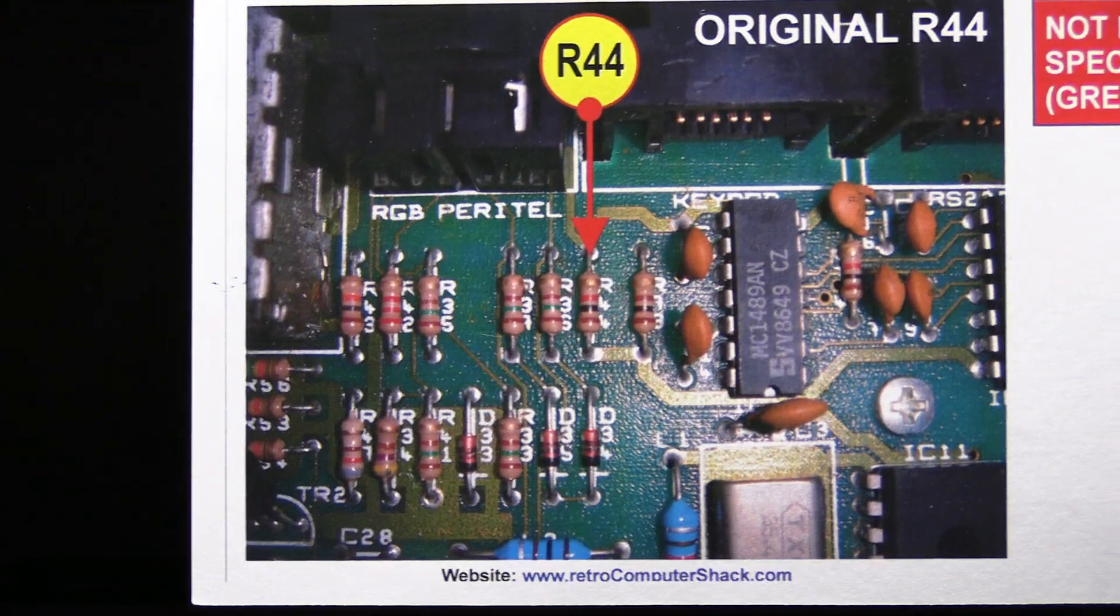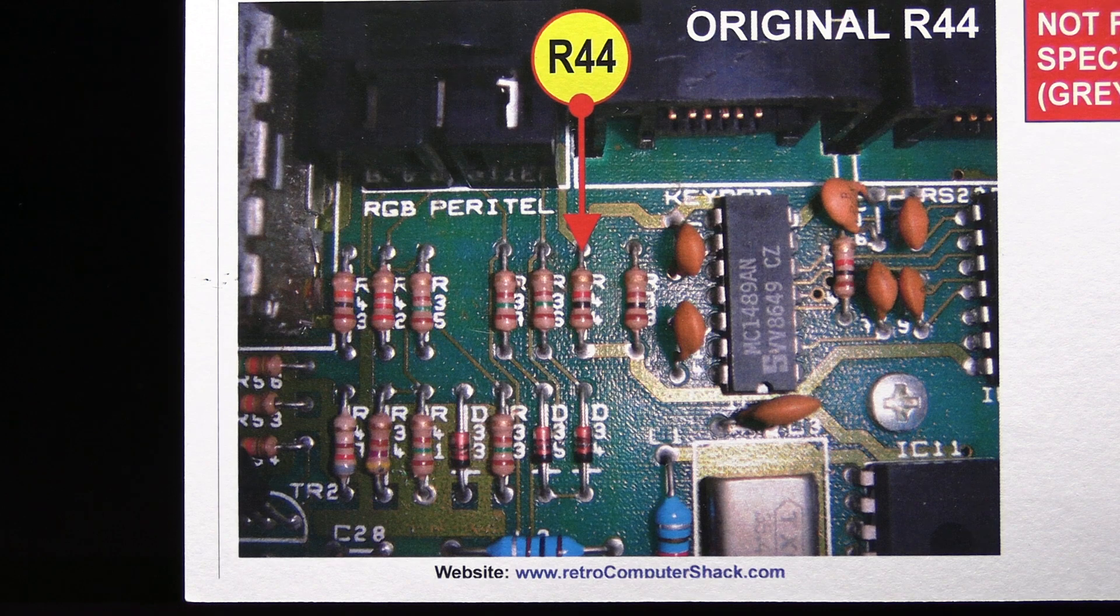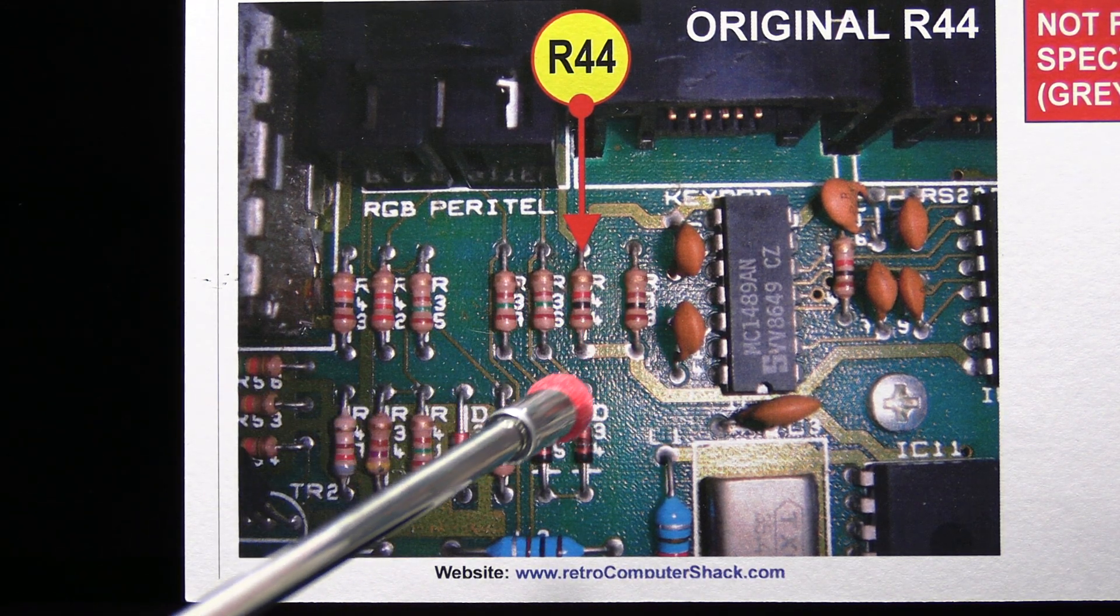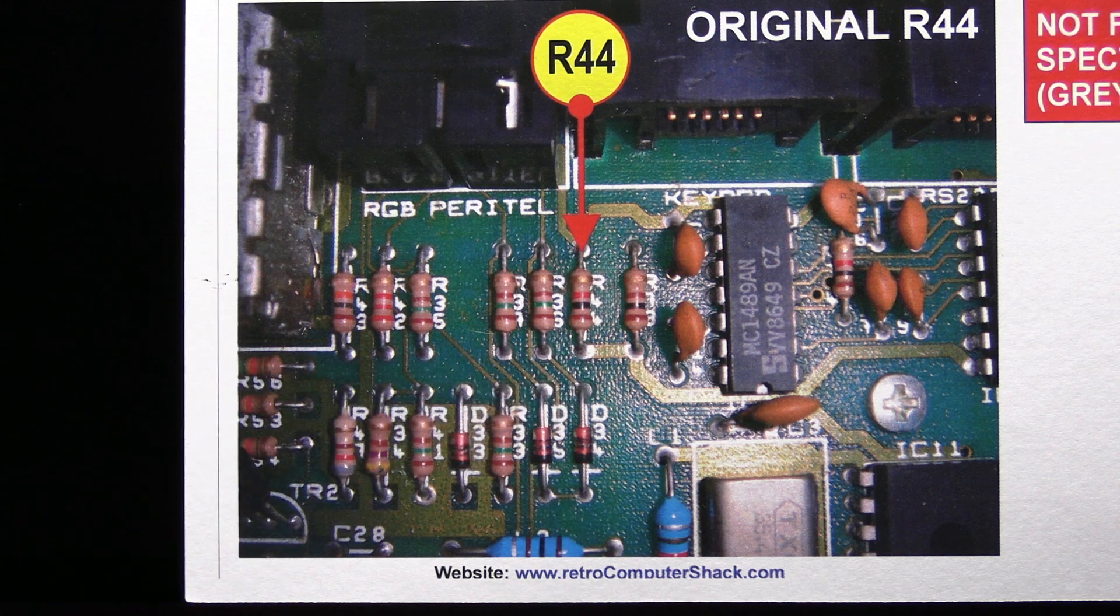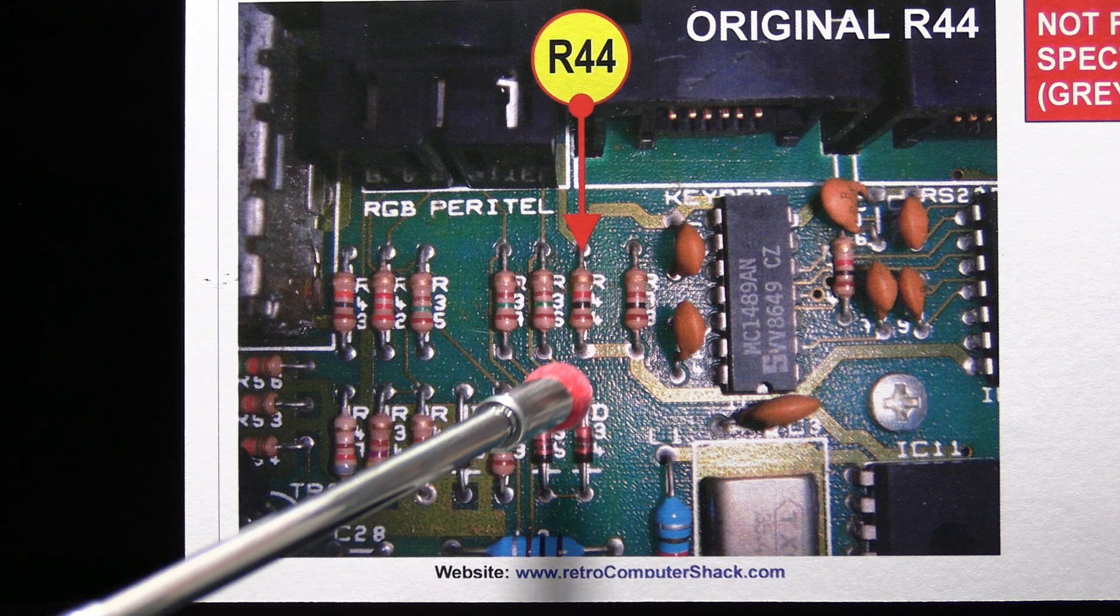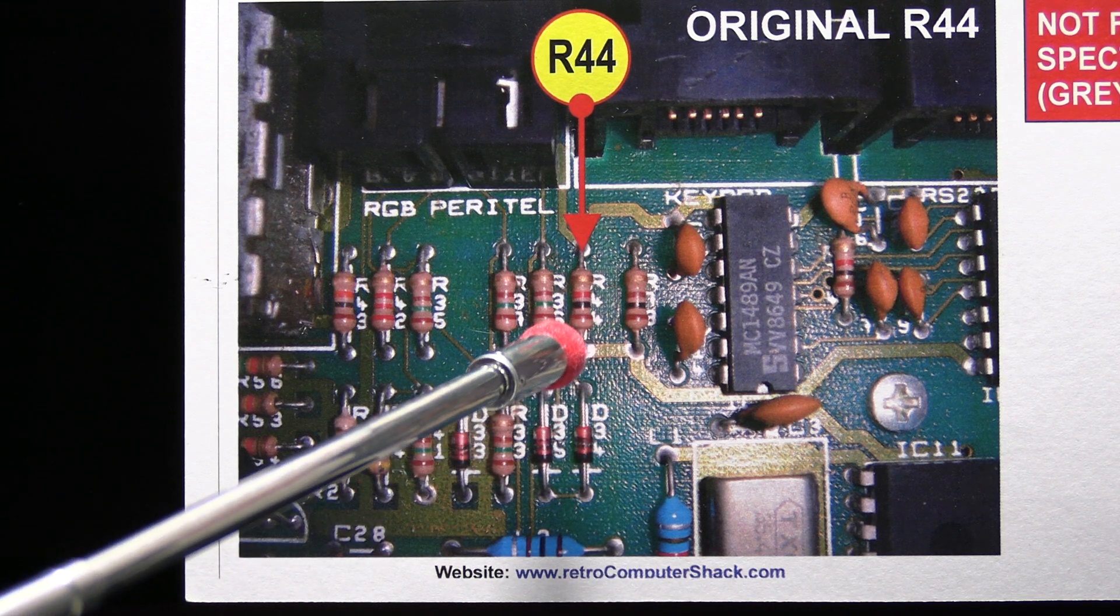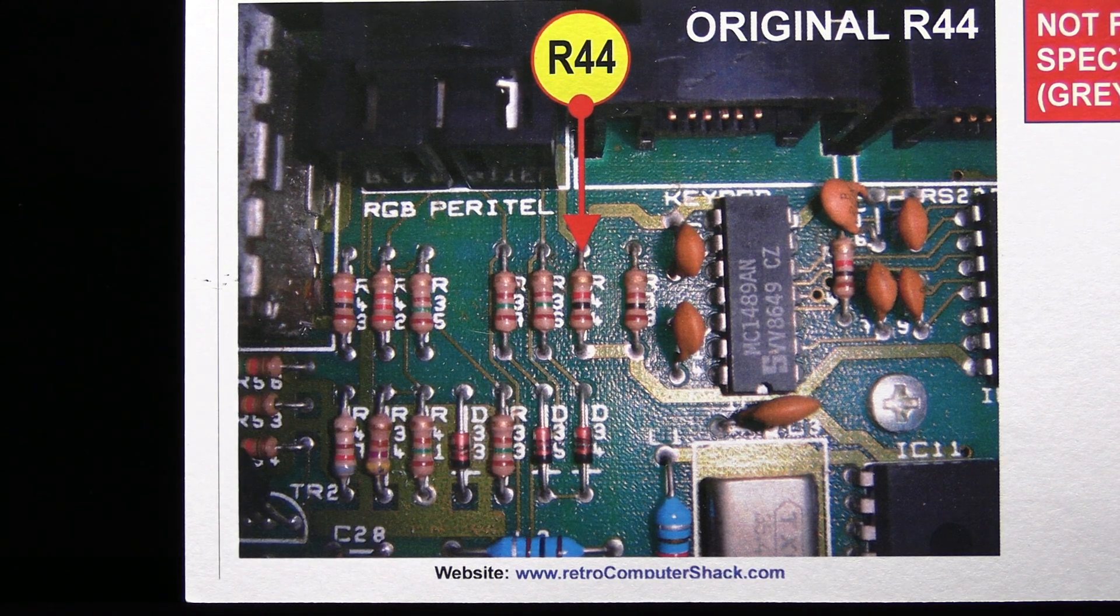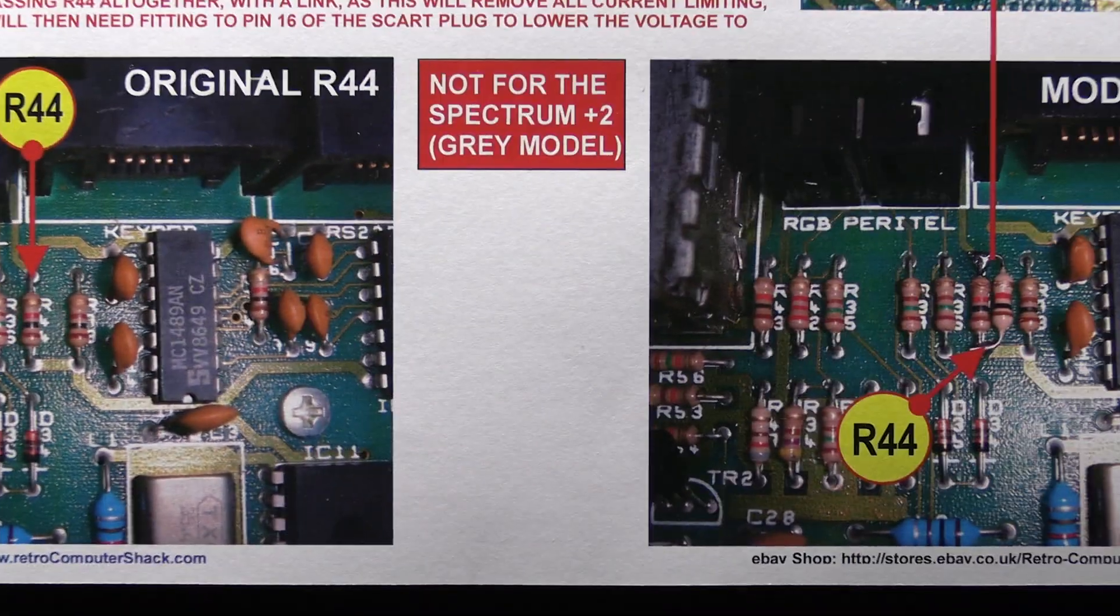Inside the Spectrum on the circuit board just below the RGB socket you'll find R44 which as you can see at the moment is 1k. So basically you can remove that resistor and replace it with a 470 ohm or anywhere between about 470 and 680 ohm. But you'll need to remove the circuit board to do that. Or an easier way of doing it